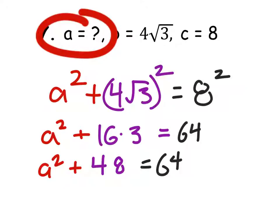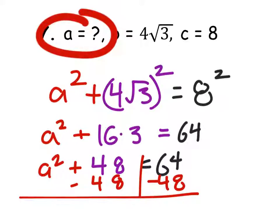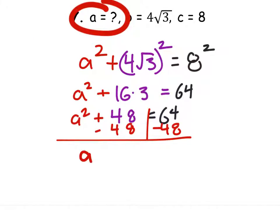To solve for A, we'll need to subtract forty-eight from both sides. That gives us A squared equals sixteen. Oh, that's nice, because sixteen is a perfect square, so when we square root, we get A is four.